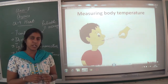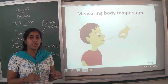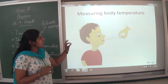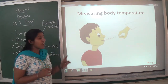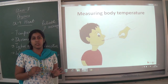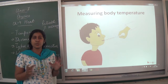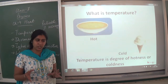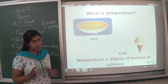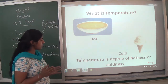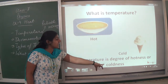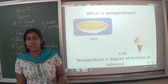How do we measure body temperature? Through the thermometer. Temperature is a reliable measure to measure body temperature. Temperature is also a degree of hotness and coldness — not only hotness, even coldness is included.